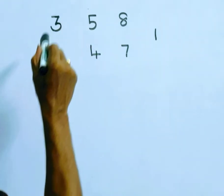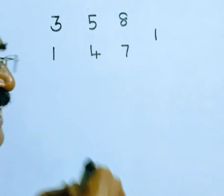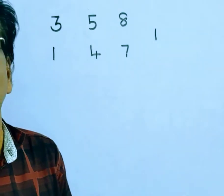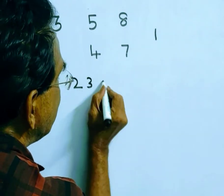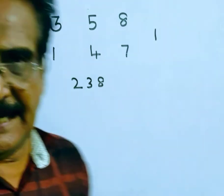79 into 3 plus 1. Friends, 79 into 3 is 237 plus 1 equals 238. Friends, the number is 238.